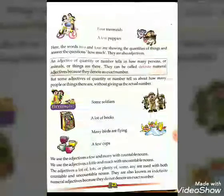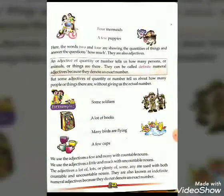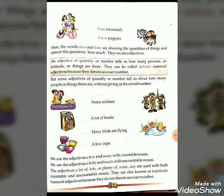Adjective of quantity: an adjective of quantity or number tells us how many persons, animals, or things there are. They can be called definite numeral adjectives because they denote an exact number. But some adjectives of quantity tell us about how many people or things there are without giving an actual number.